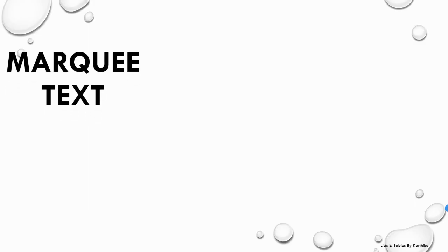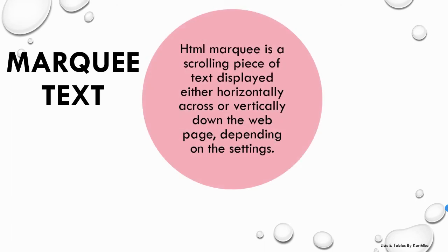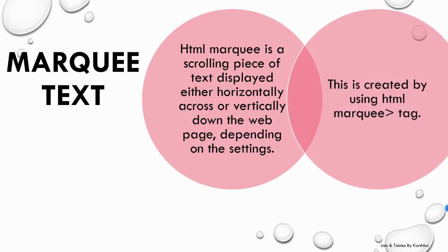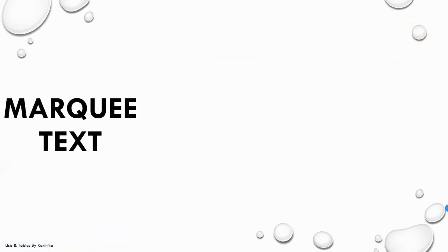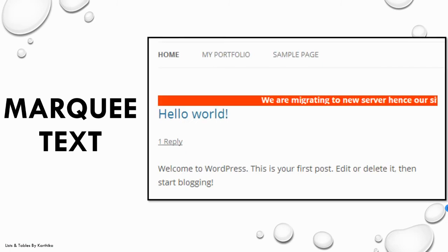Next we have marquee text. Marquee text is text that scrolls on the screen — like important notifications scrolling at the top or bottom of a website, or the news ticker on news channels scrolling from right to left. We use the marquee tag for this. The structure is: open marquee tag, type the text, then close marquee tag.